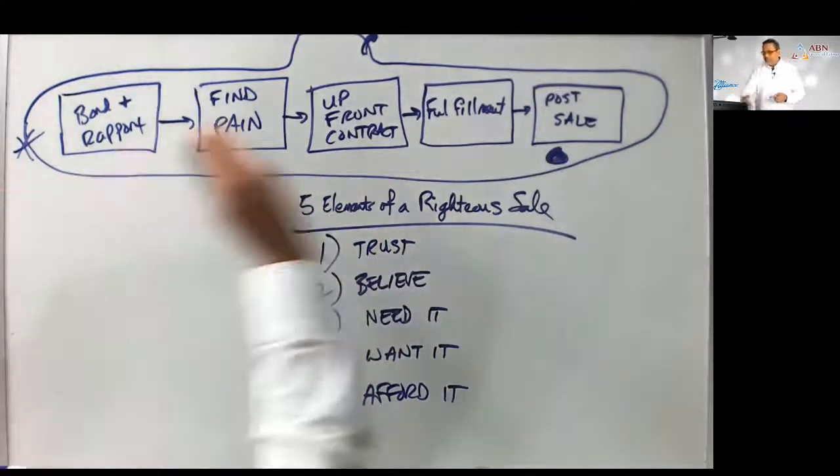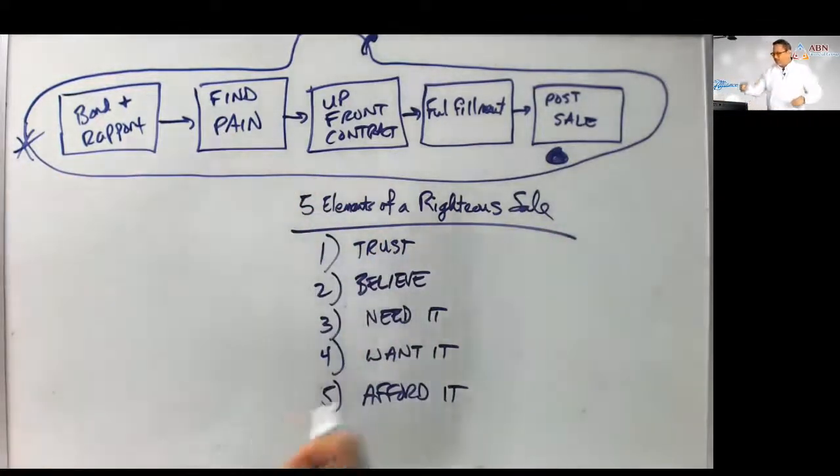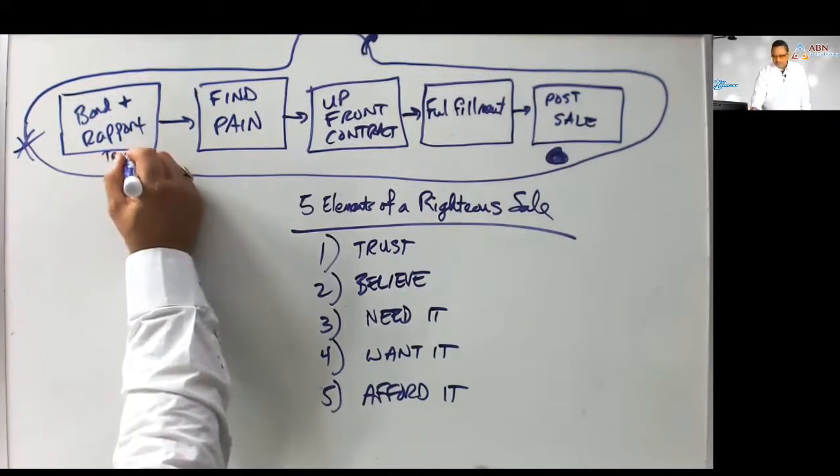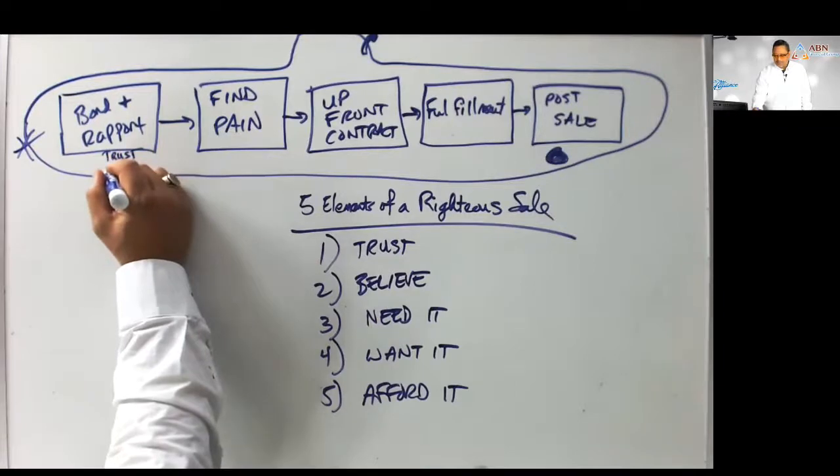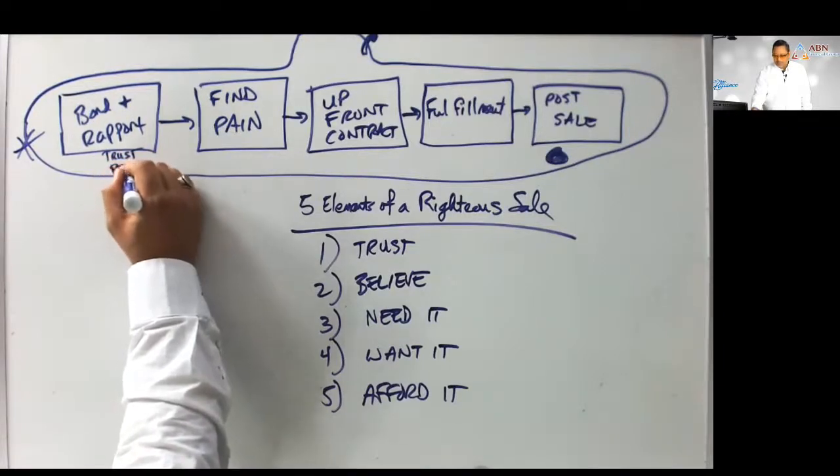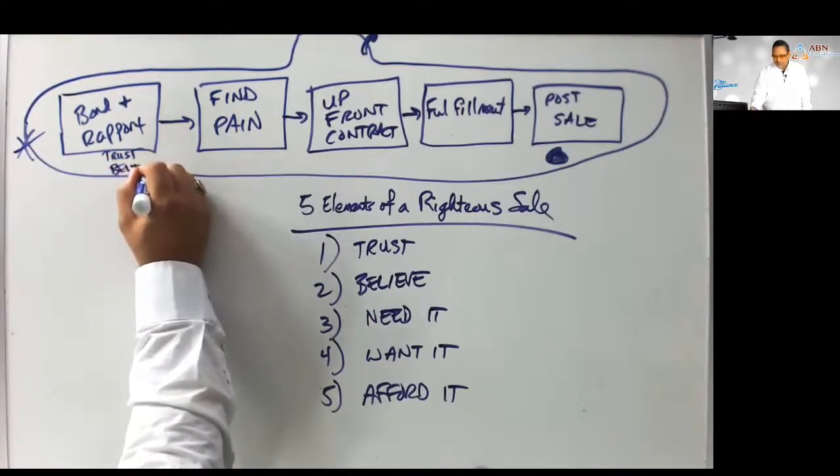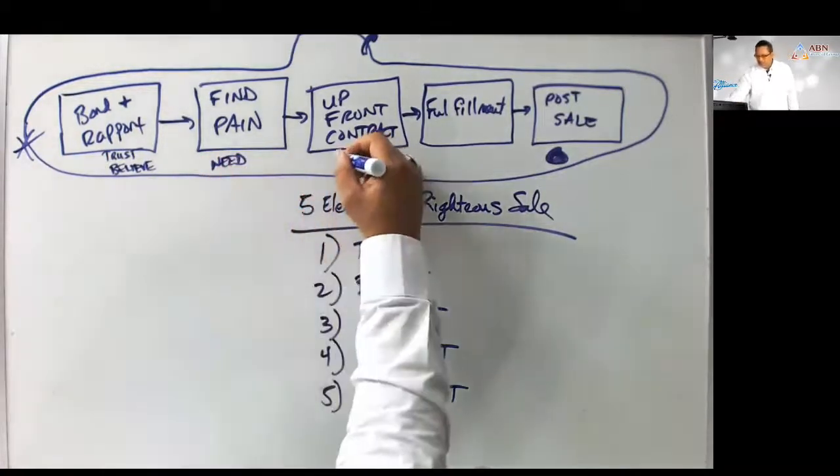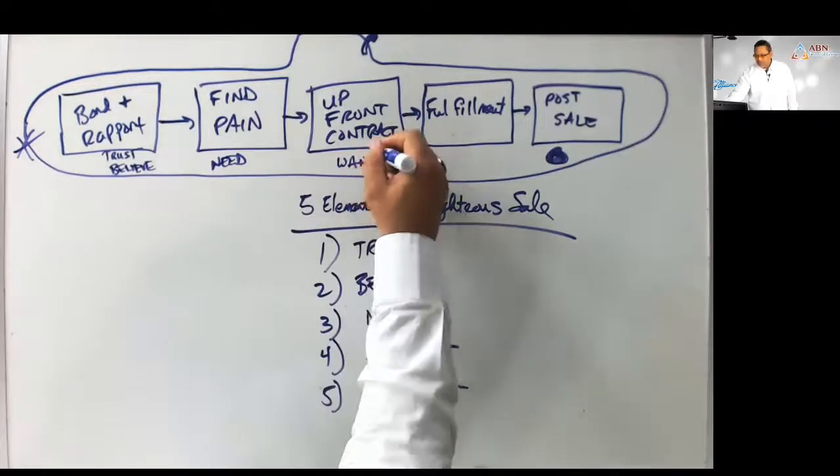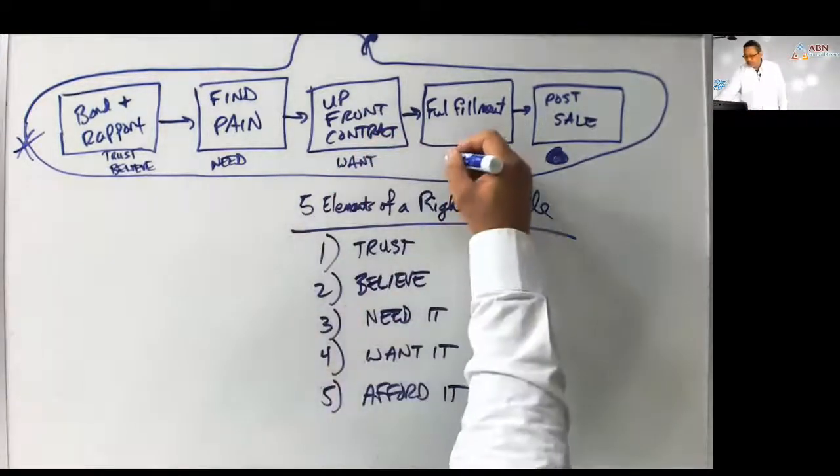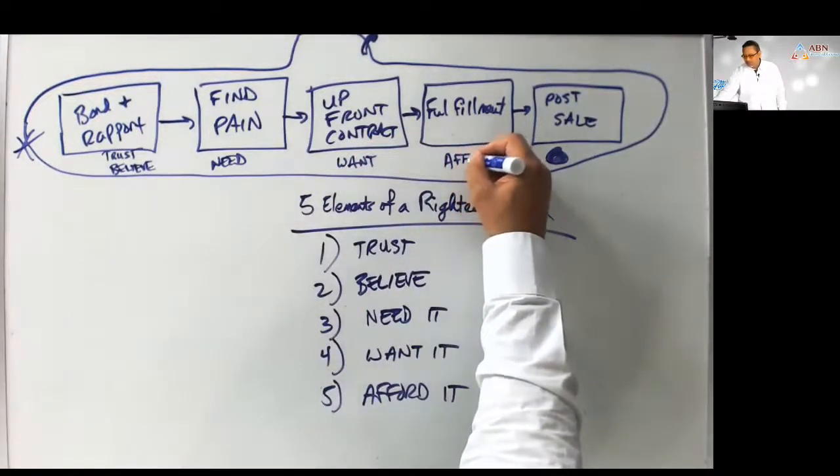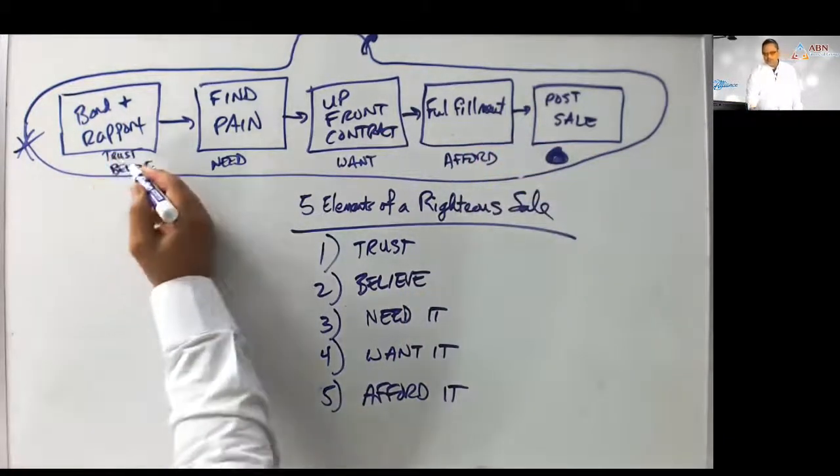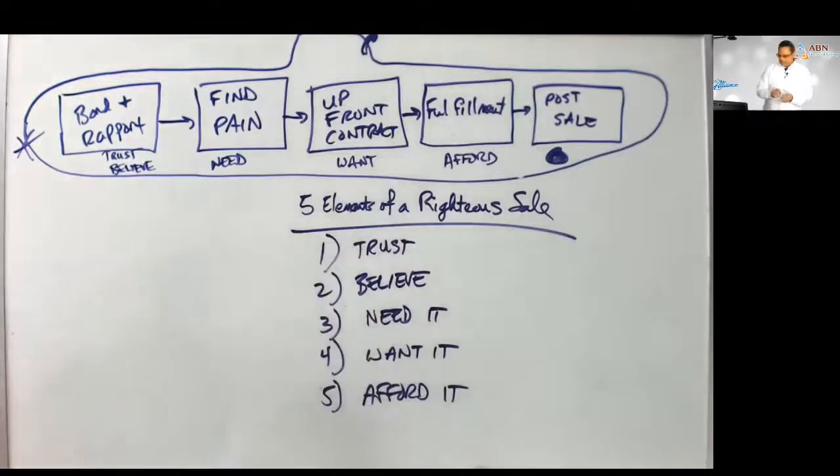Now, where in this process do you develop this? Bond and rapport is important to build trust and get them to believe you. Finding pain is where you establish the need. Upfront contract is where you establish the want. And the fulfillment is where you establish the afford. Trust, believe, need, want, and afford.